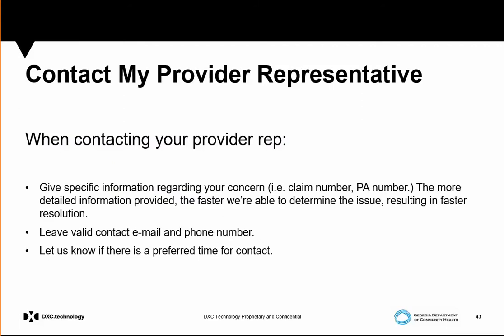This is where you can submit a request to a provider representative. Whenever there's an issue and you need additional help, you can submit a request to your provider relations field services rep. Be detailed about the issues you're experiencing — if it's a claim issue, include the claim number; if it's a prior authorization or member ID issue, include those specifics. This can be done securely through the website using your username and password. The more information you provide upfront, the faster a resolution can be reached. Leave an email address and phone number, and specify the best times to contact you.